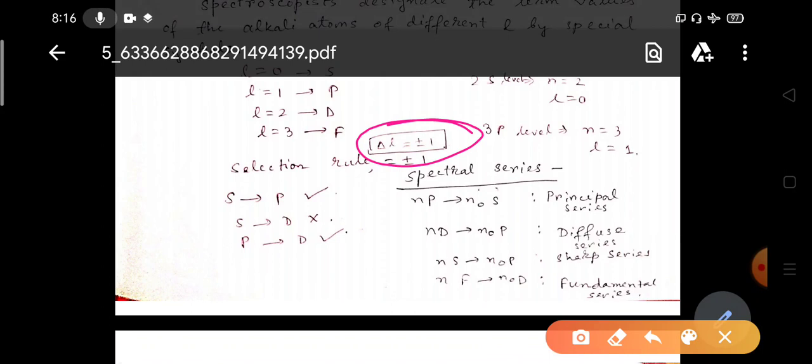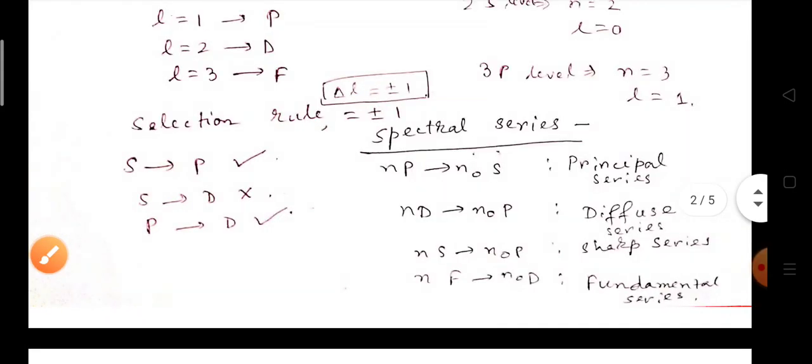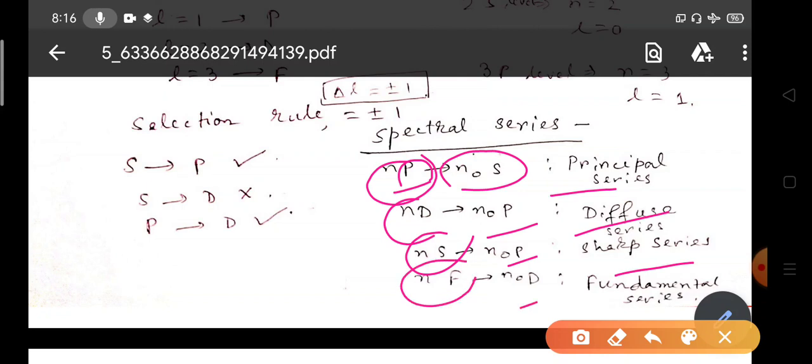According to selection rule the allowed transition, S to P or P to S is allowed. S to D is not allowed because delta L equals to plus minus 2 will be there. P to D is allowed and we have to remember the spectral series. NP to N naught S is the principal series, ND to N naught P is the diffuse series, NS to N naught P is the sharp series, NF to N naught D is the fundamental series.